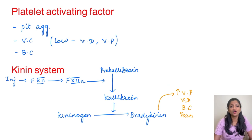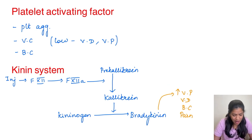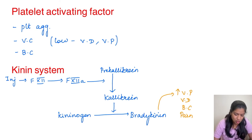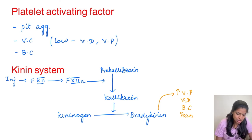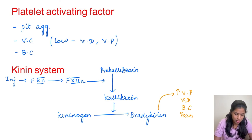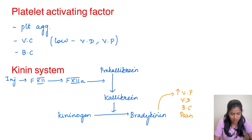Moving on to the next inflammatory mediator: platelet activating factor. As the name suggests, it causes platelet aggregation. Apart from that, it also causes bronchoconstriction and vasoconstriction. However, in low doses it is capable of causing vasodilatation and vascular permeability as well.